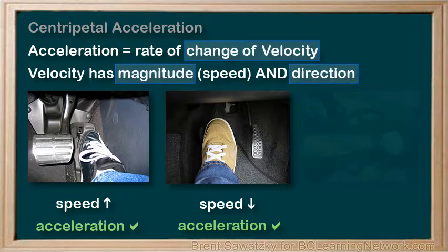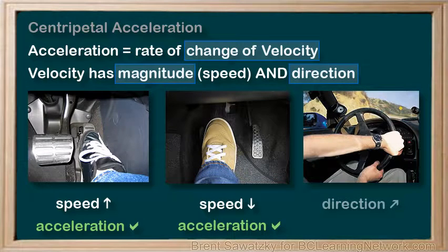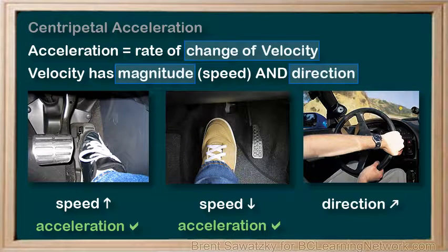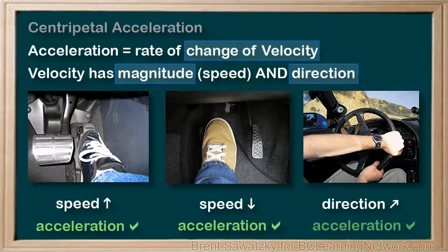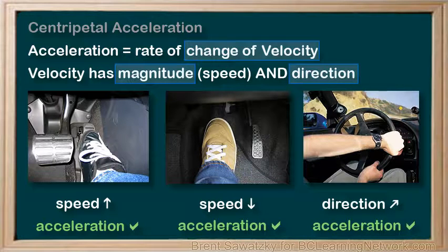For example, if you're driving around a curve in a road, even if you keep your speed at exactly 50 kmph, that is, the magnitude of the velocity stays the same, you are definitely accelerating. You feel yourself being pushed against the car door as you take the corner.